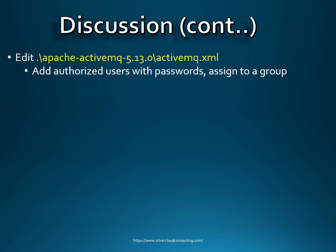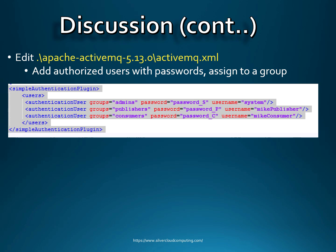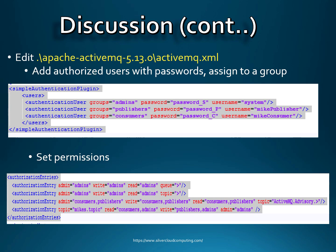We're going to edit the ActiveMQ.xml file, then add users with passwords and assign them to different groups. Those groups will define whether you can read or write to the topic. In this ActiveMQ.xml file, we're going to add a section that defines the users allowed to access our ActiveMQ instance. I have three users: an admin user called 'system' with a password; a user in the 'publishers' group called Mike's Publisher with password_P; and a user in the 'consumers' group called Mike's Consumer. The users, their passwords, and their group memberships are all defined in this section.